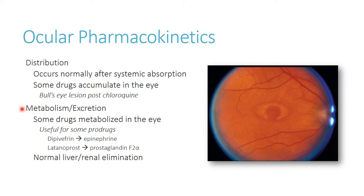As far as metabolism and excretion go, there's a little bit of metabolism that actually occurs within the eye itself — there are some enzymes there. This can be useful for pro-drugs. Remember, pro-drugs are inactive in their current state but have to be enzymatically activated. A good example is dipivephrine, which gets turned into epinephrine — causing dilation of the eye, useful for exams or surgeries. Latanoprost gets converted into a prostaglandin, which is important for glaucoma. Once absorbed systemically, normal liver and renal elimination applies.